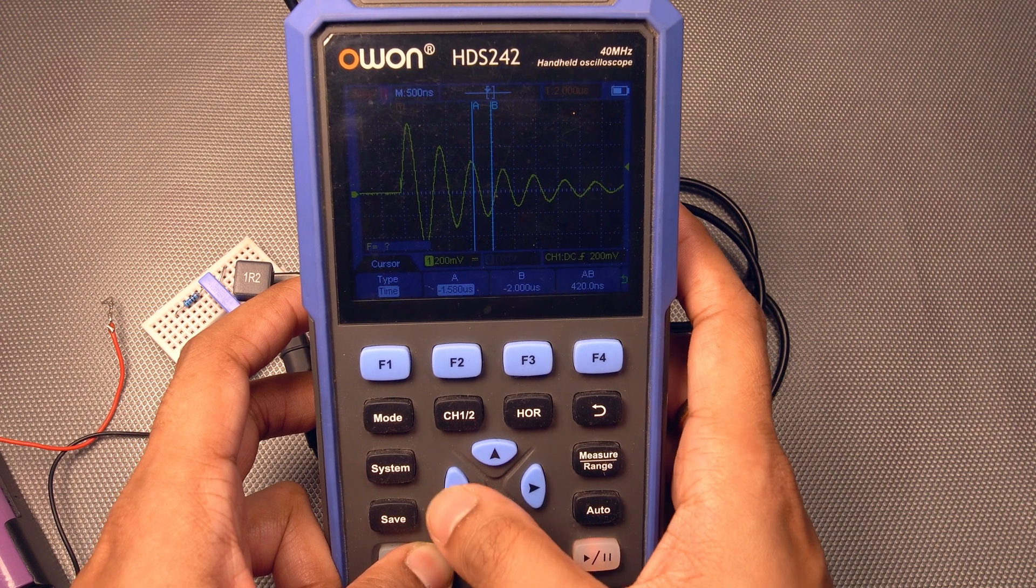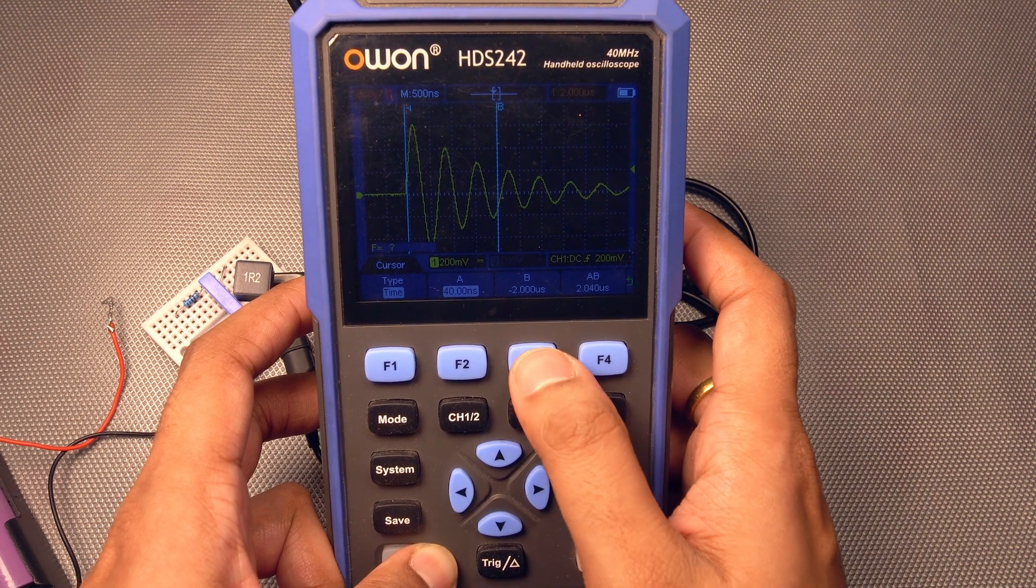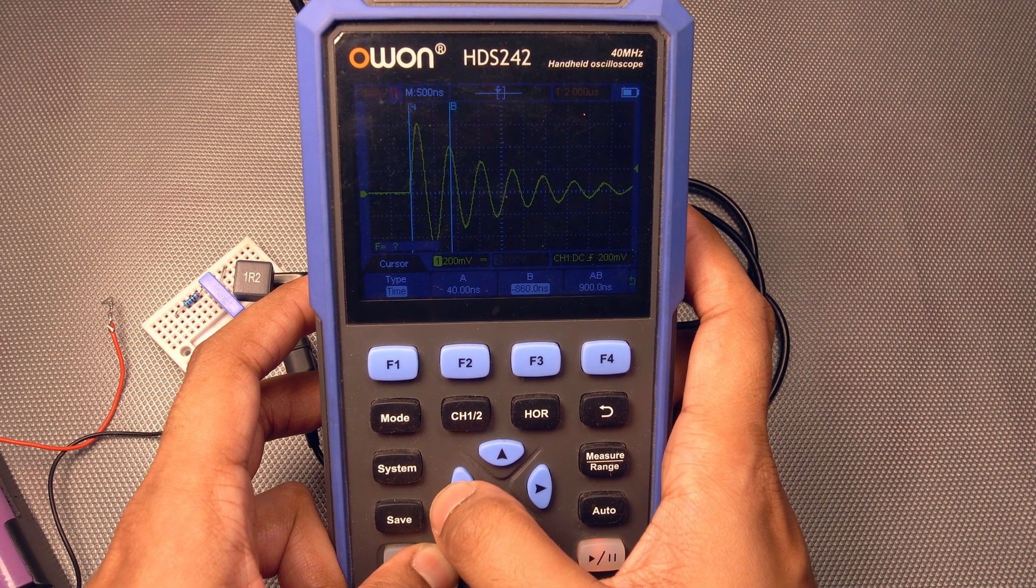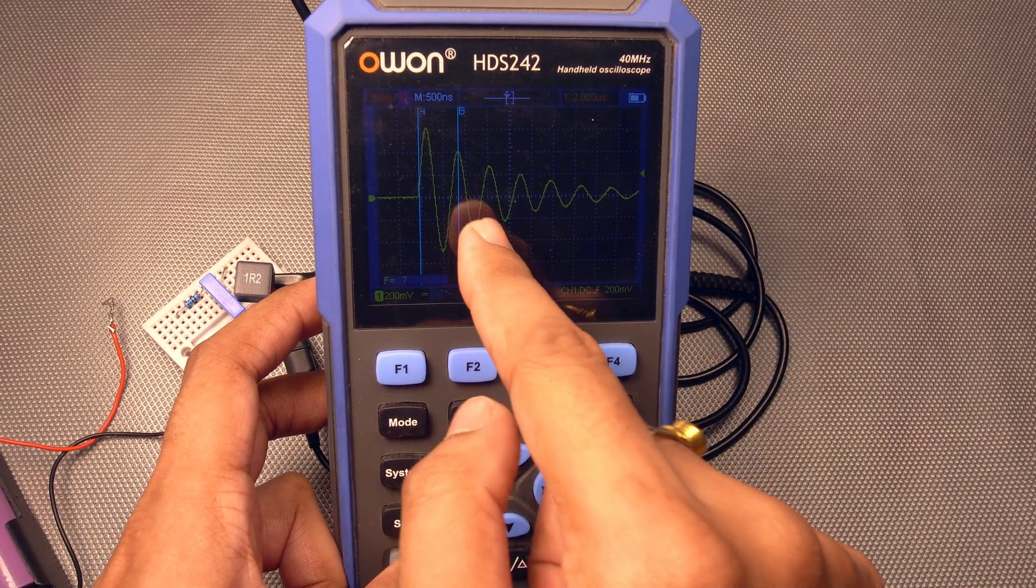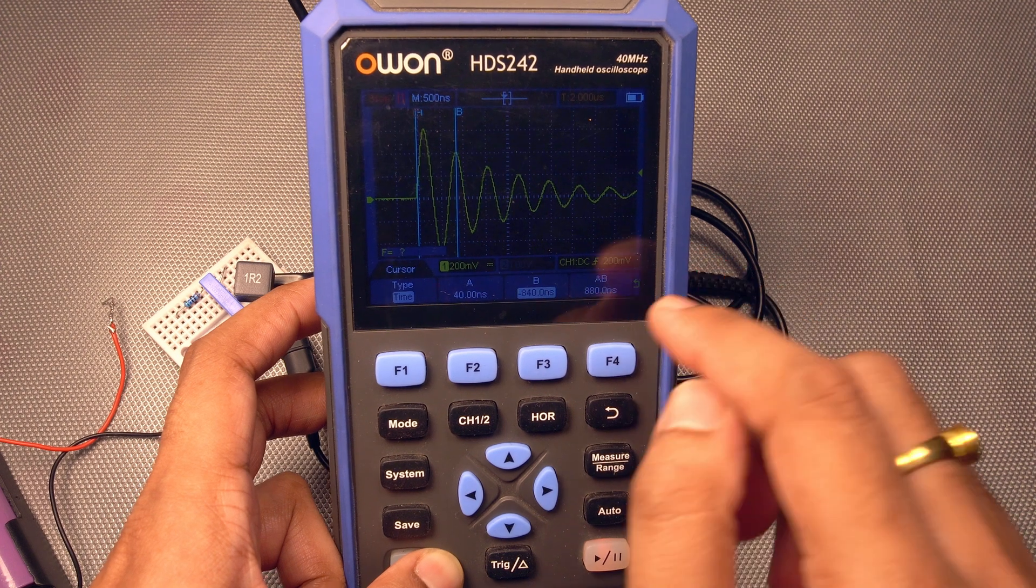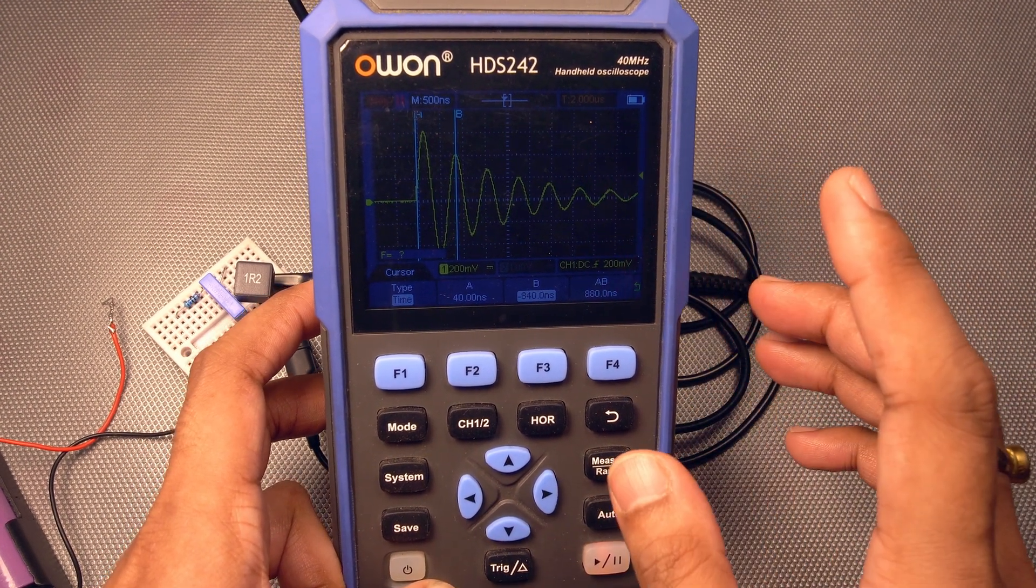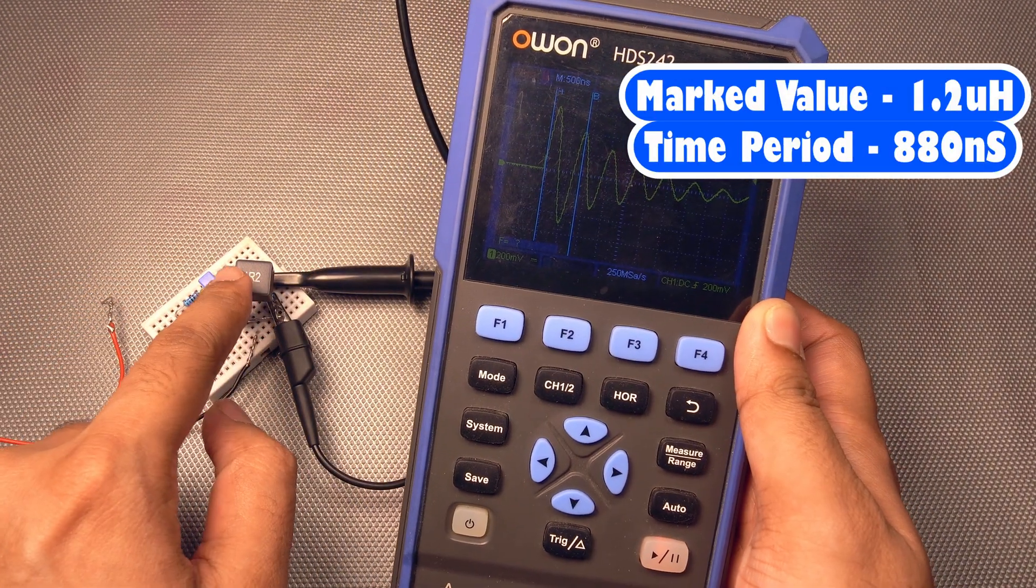Okay, and let us set the A point to here and the B point to here. So this is frequency, one high and one low. And if you see the value is 880 nanoseconds.